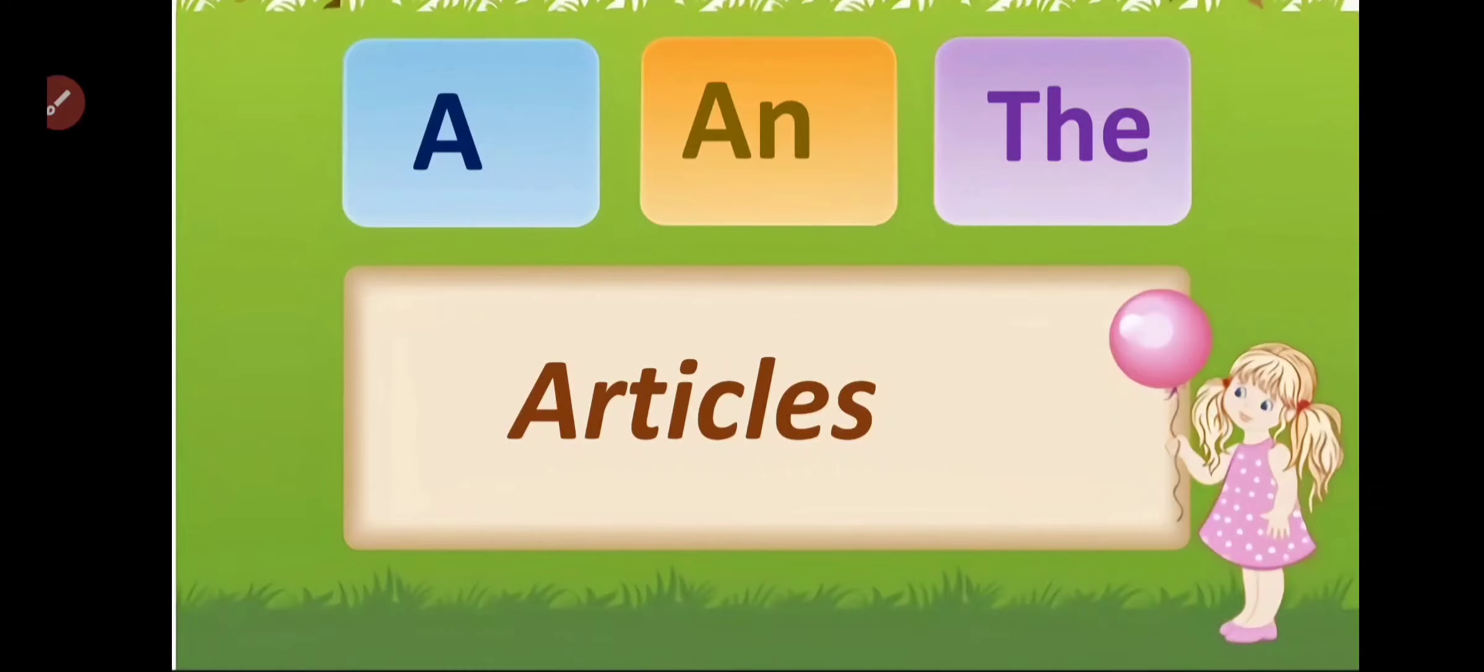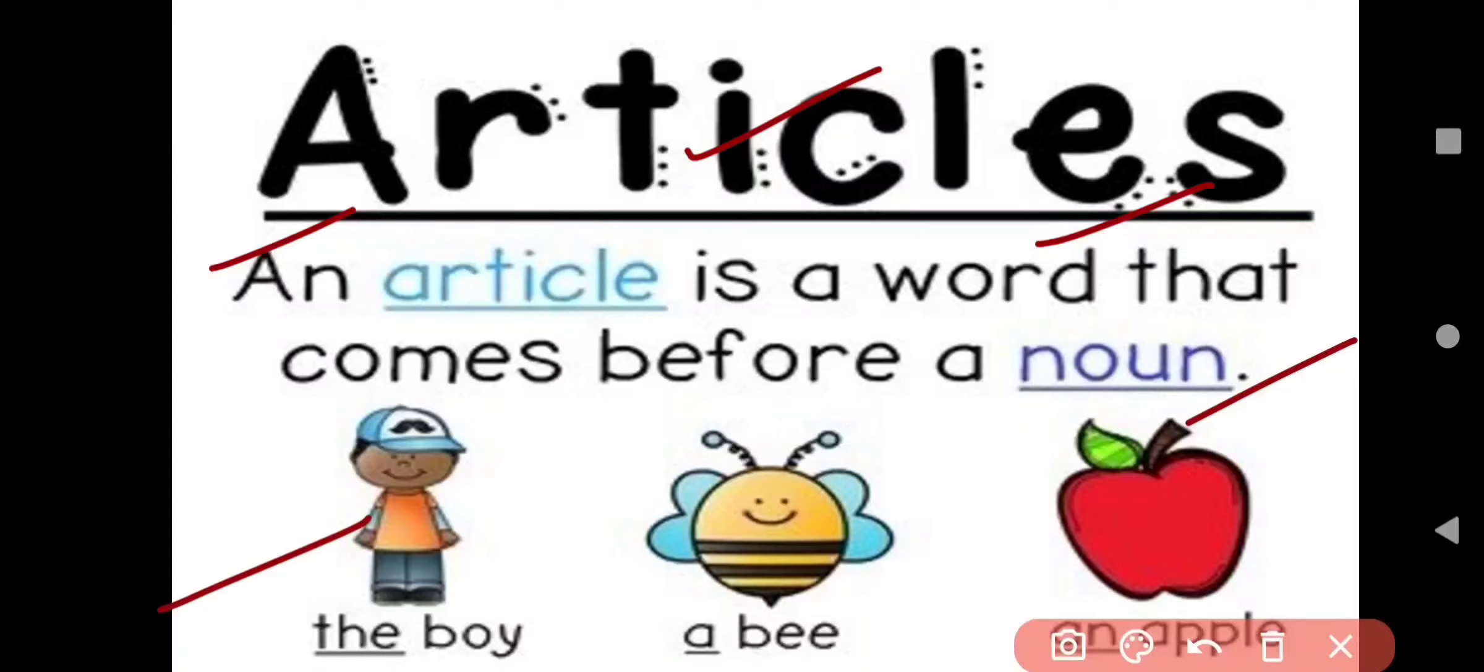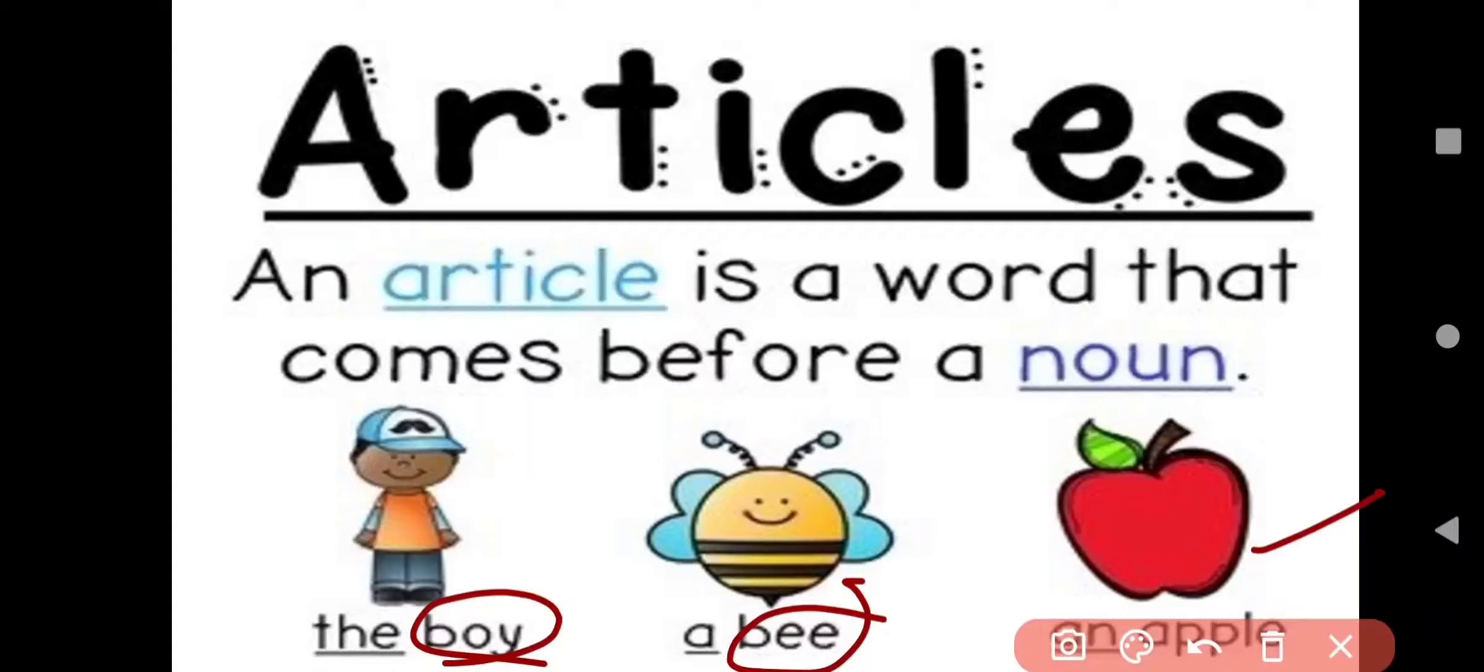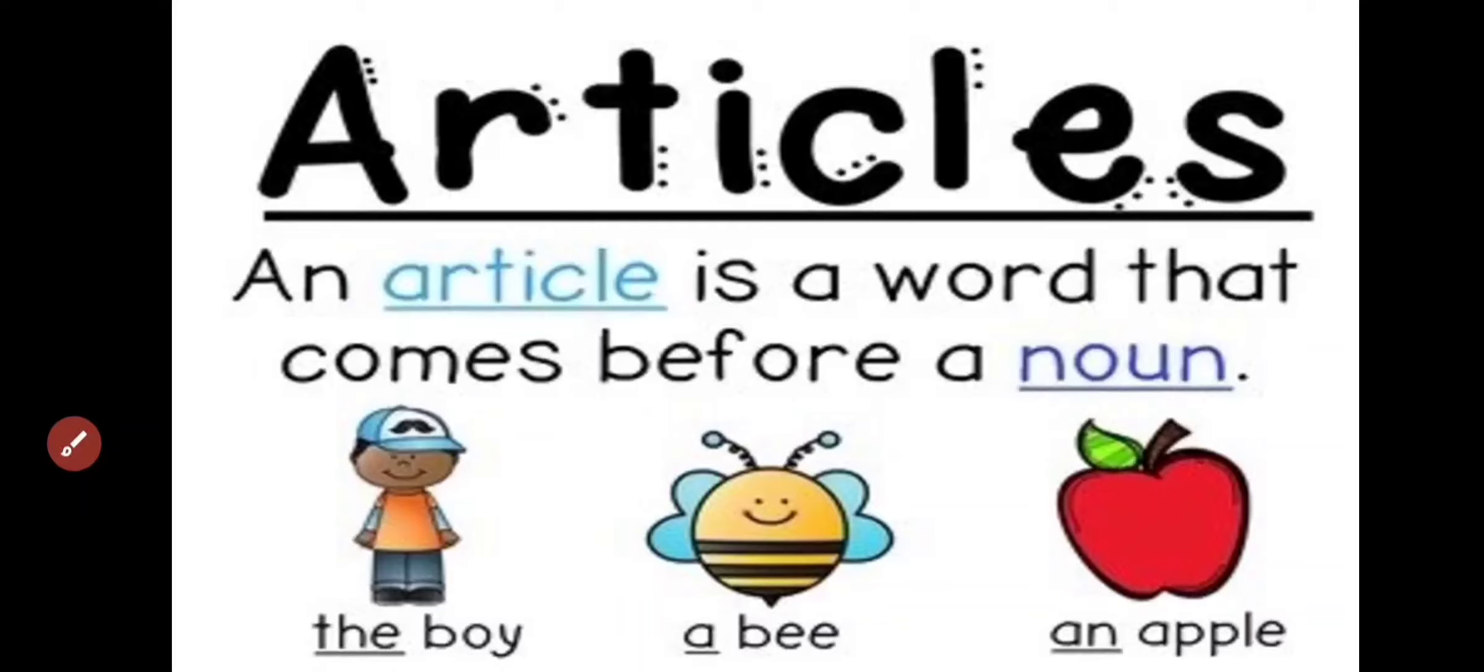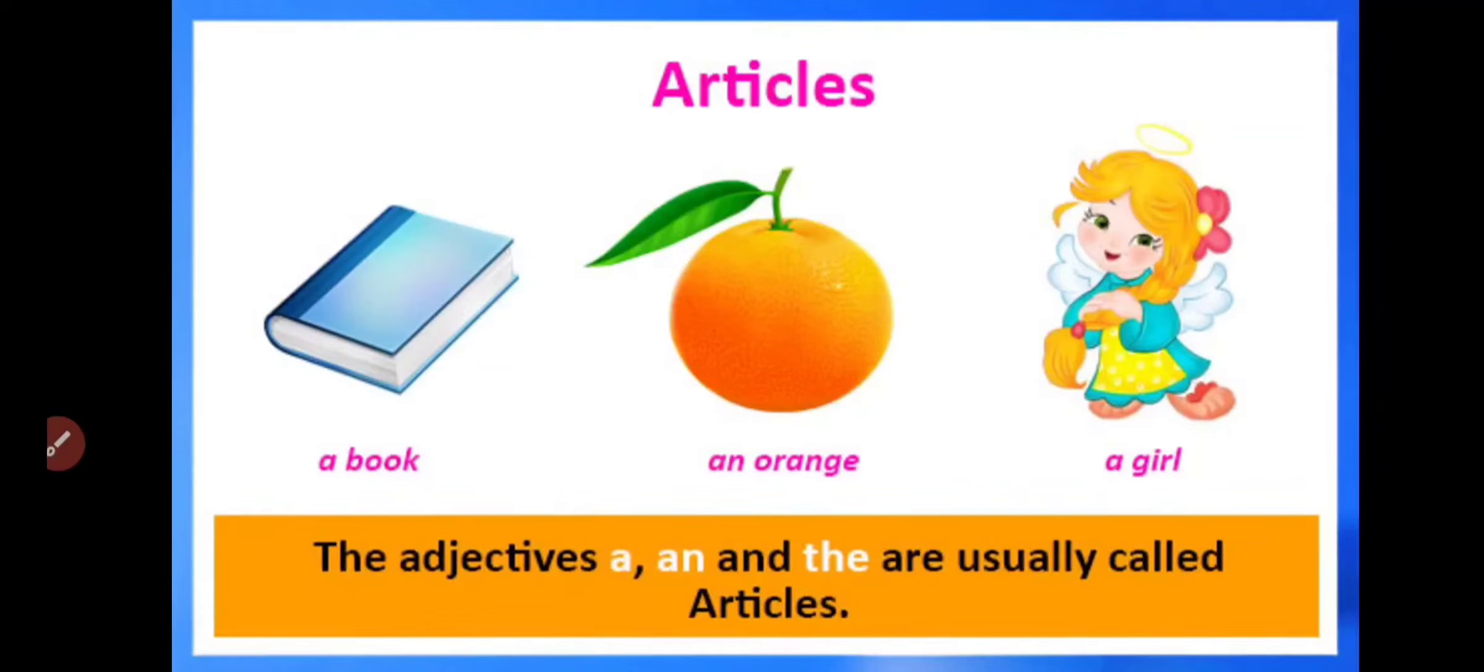So let's continue with a and the, or articles. First of all, what are the articles? An article is a word that comes before a noun. Like the boy, a bee, an apple. Here boy, bee, and apple are nouns. And I used here the, a, or an. So these will be articles. The words a, an, and the are usually called articles.